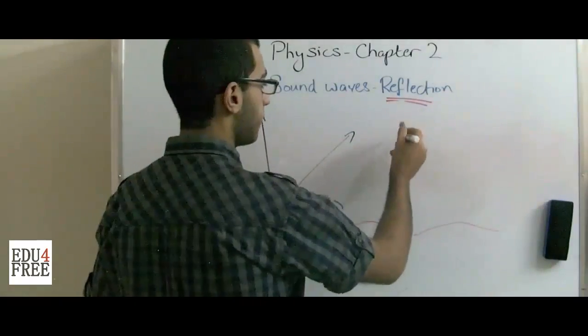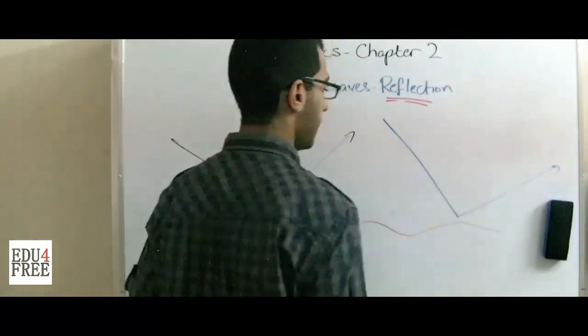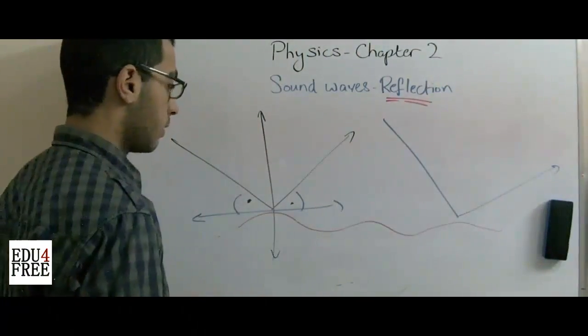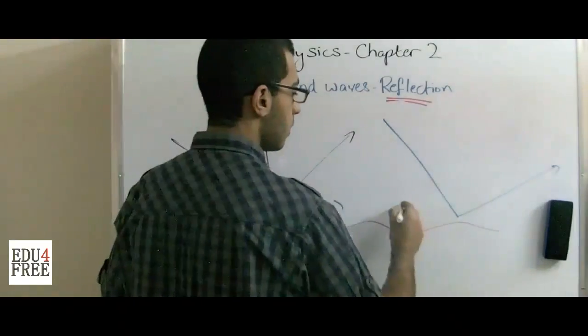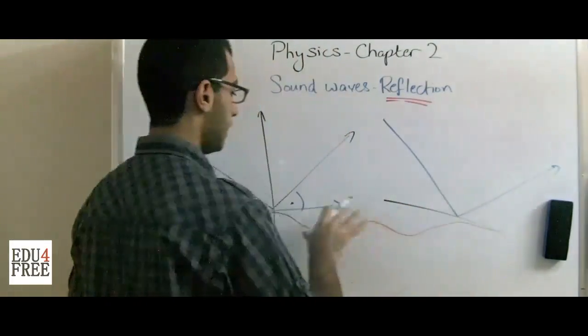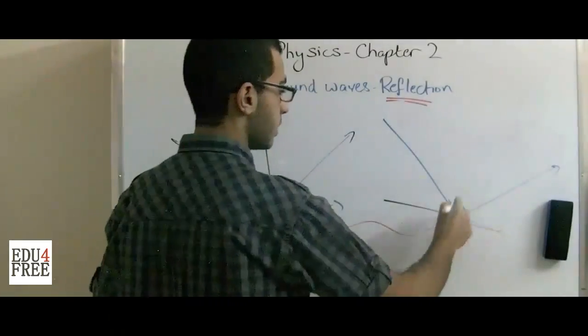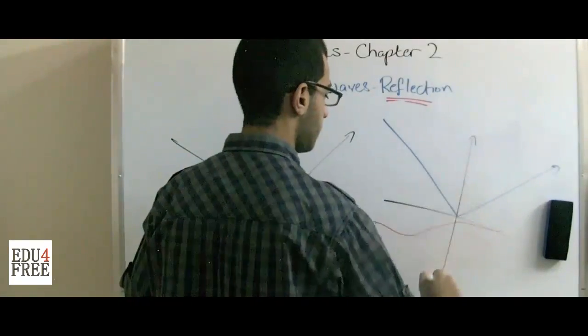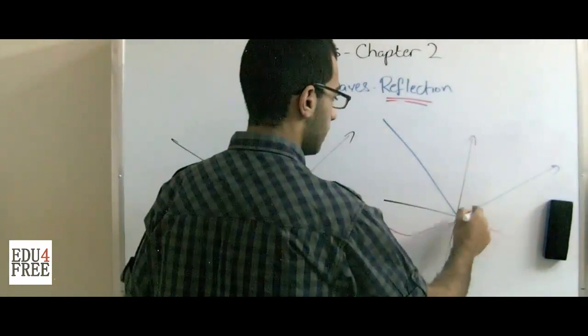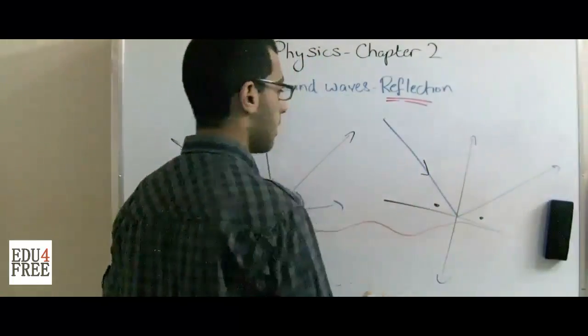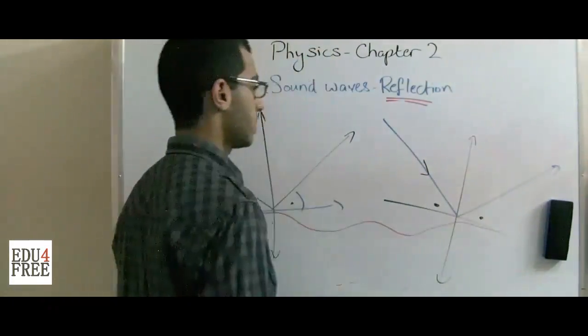If another incident ray fell like that and was reflected this way, the normal will be inclined in the other position so that the angle of incidence is equal to the angle of reflection.